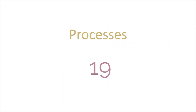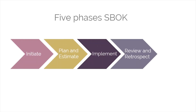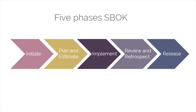Finally, we have the processes. There are a total of 19 processes in the SBOT Guide. These processes are distributed throughout the five phases: Initiate, Plan and Estimate, Implement, Review and Retrospect, and Release. Within the phases, you will find a detailed description of each process, its inputs, tools, and outputs.